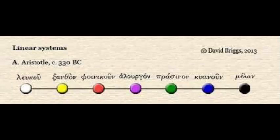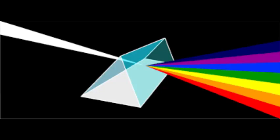Aristotle viewed color to be the product of a mixture of white and black, and this was the prevailing belief until 1666, when Isaac Newton's prism experiments provided the scientific basis for the understanding of color. Newton showed that a prism could break up white light into a range of colors, which he called the spectrum, and that the recombination of these spectral colors recreated the white light.